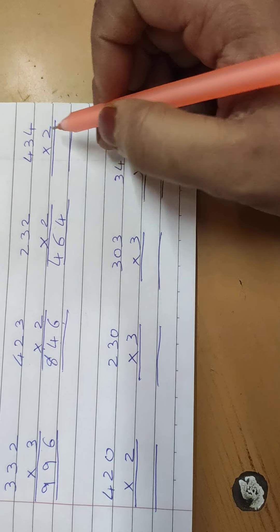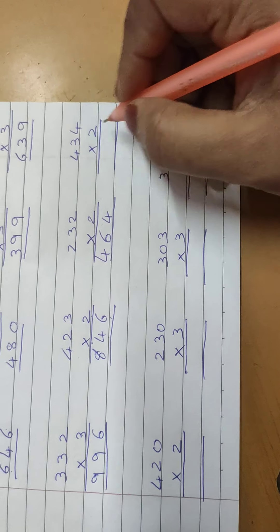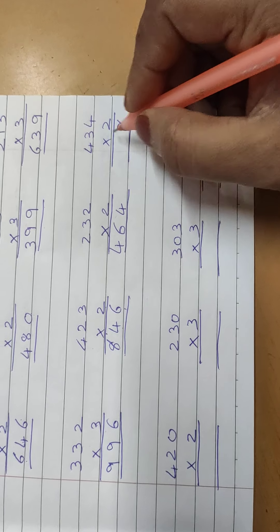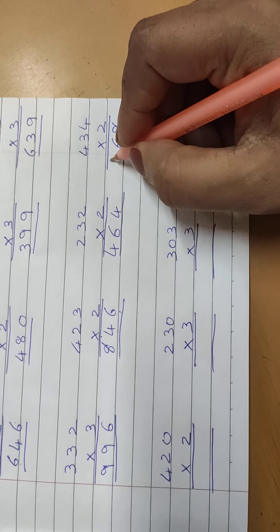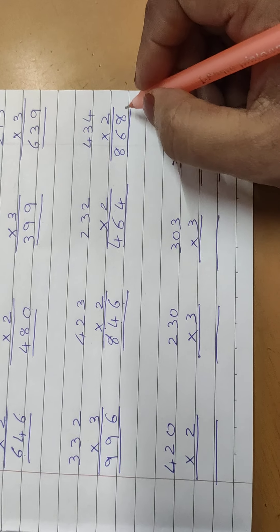Now 434 multiply by 2. 2 fours are 8, 2 threes are 6, 2 fours are 8. 868.